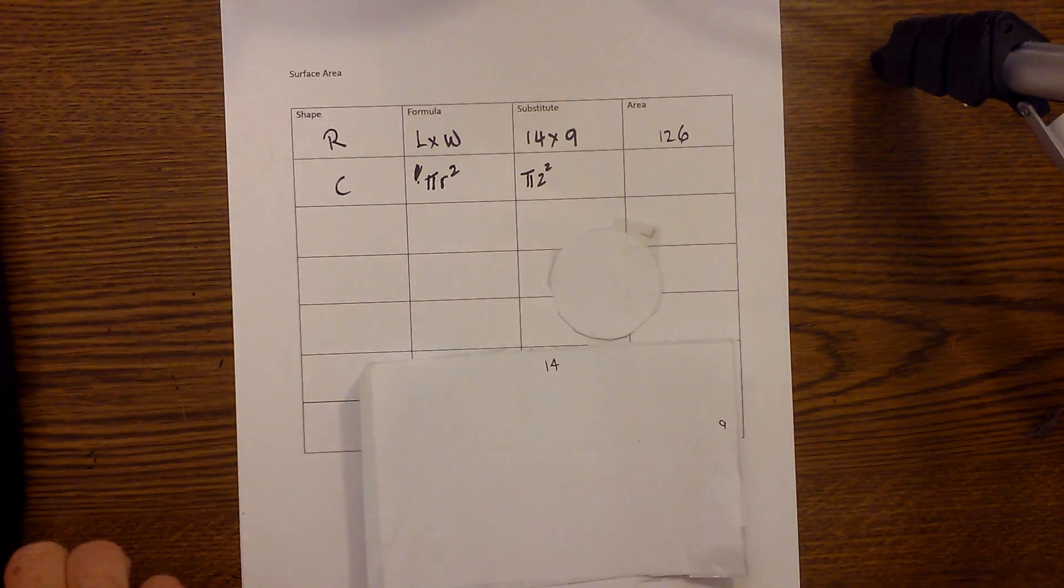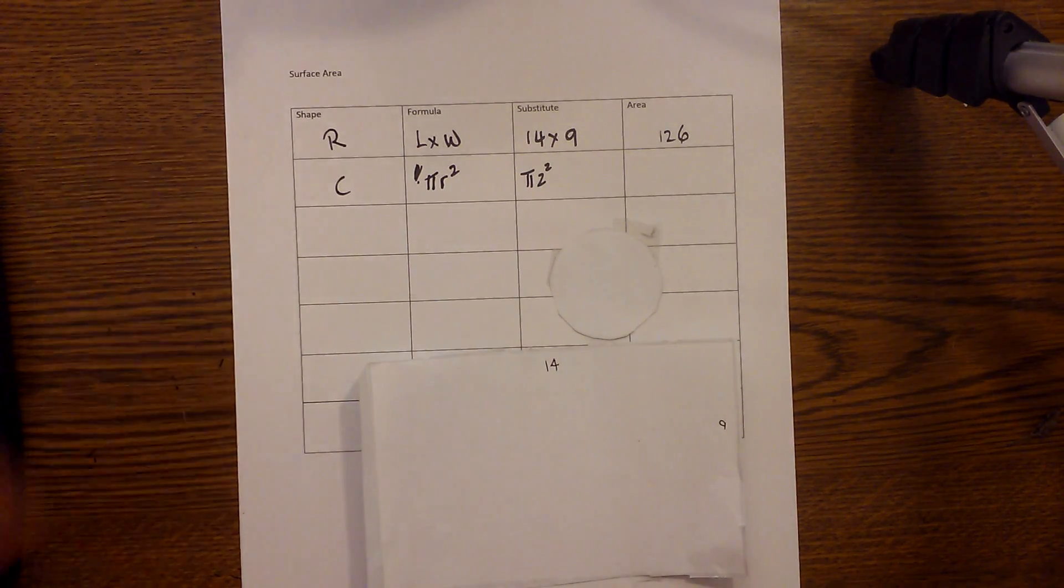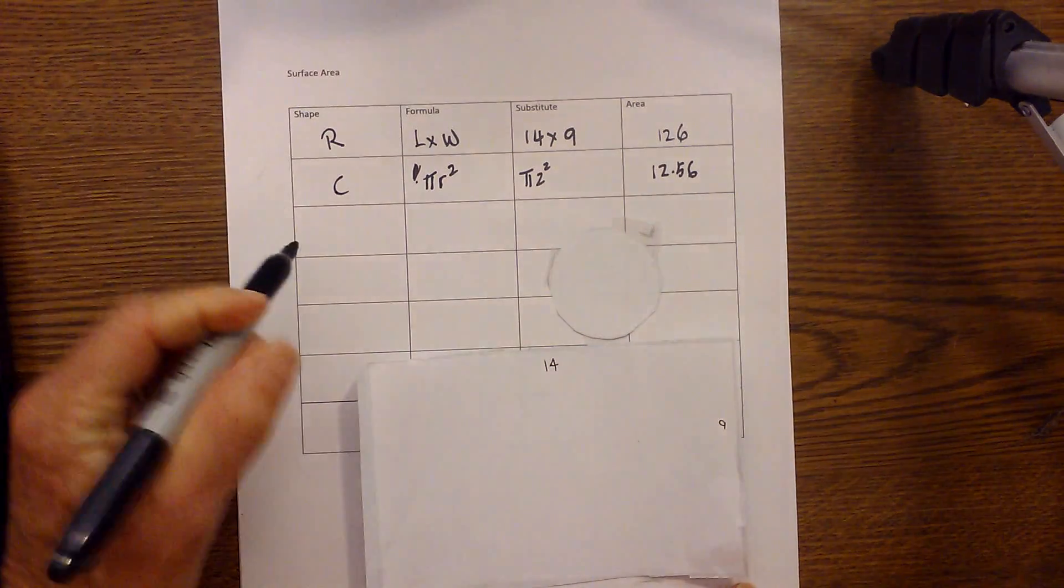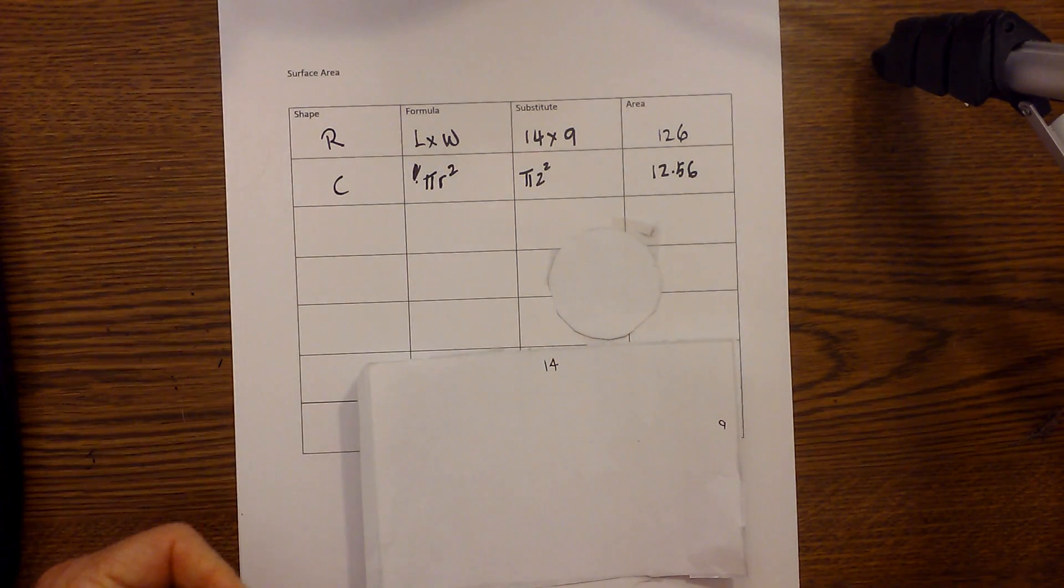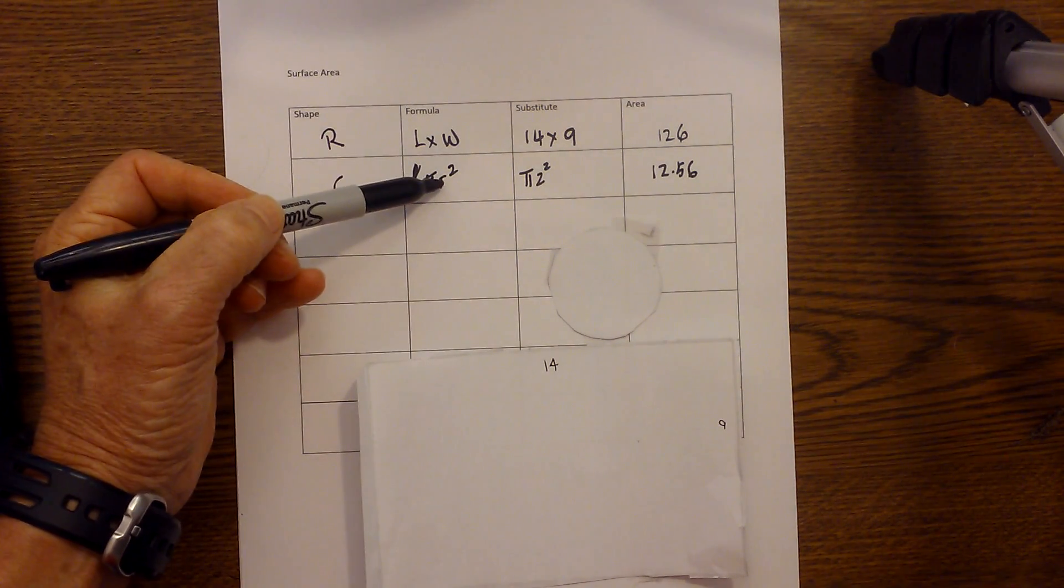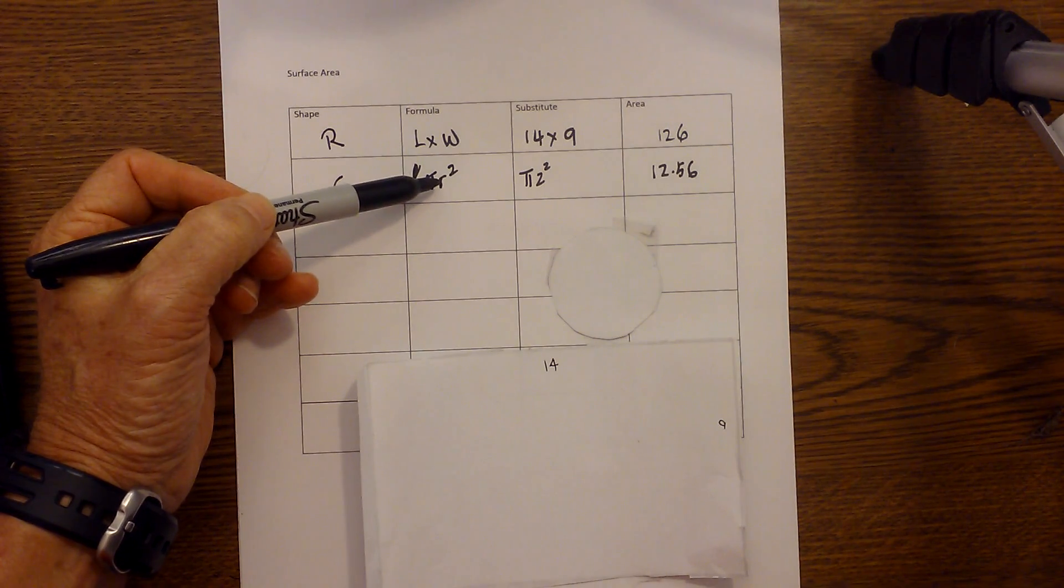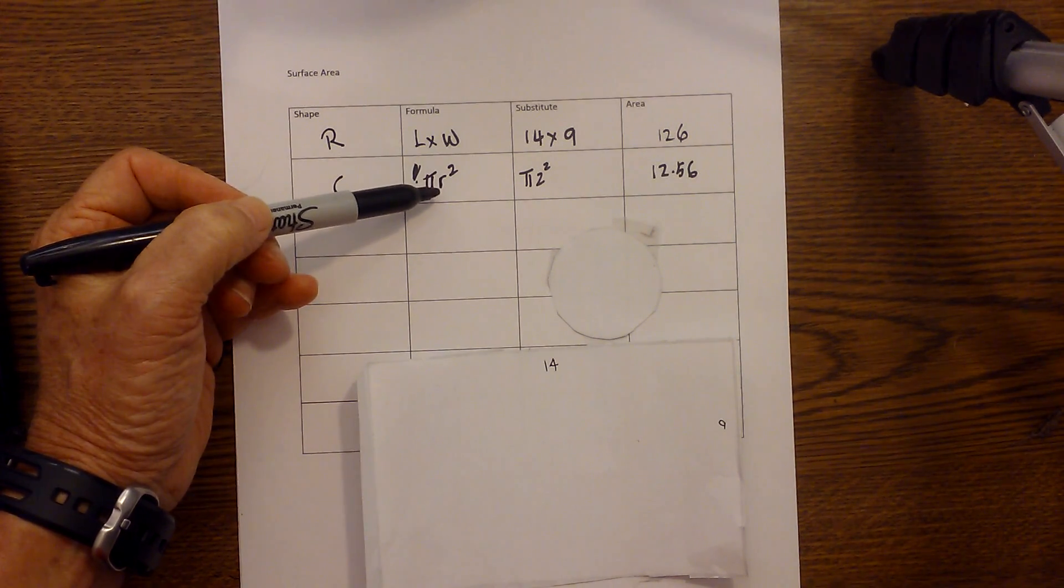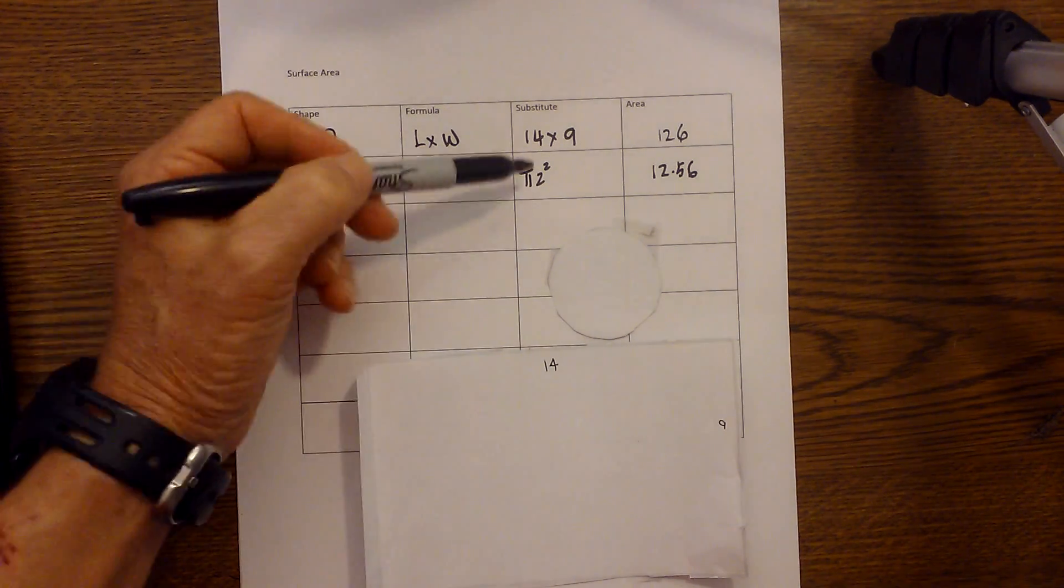I'm gonna use 3.14 for pi times 2 squared is 4 and so that is 12.56. Now please remember that just because the diameter is 4 and the radius is 2, whenever you square the radius it's not going to always equal the diameter. It just so happened with 2.